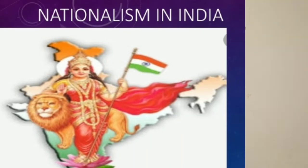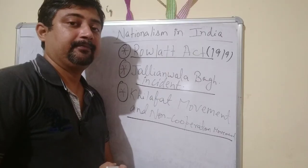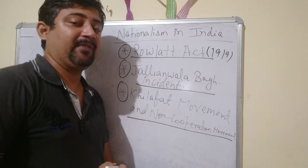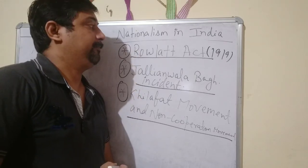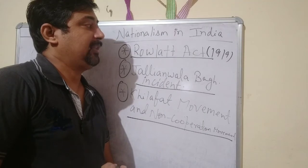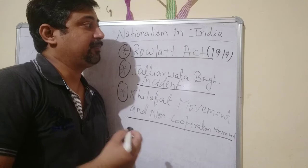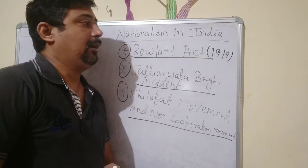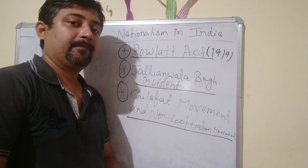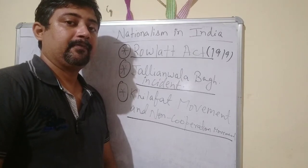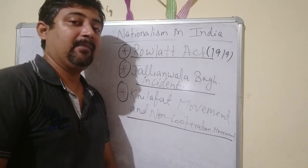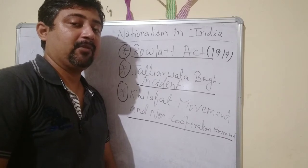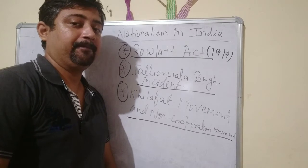Good morning students. This is the second video of the chapter Nationalism in India. So far we discussed the impact of World War One on Indians, the emergence of Gandhiji, and his specific role in promoting the idea of Satyagraha. Now we are going to discuss how Gandhiji was projected as a mass leader and how the background for the non-cooperation movement was created.